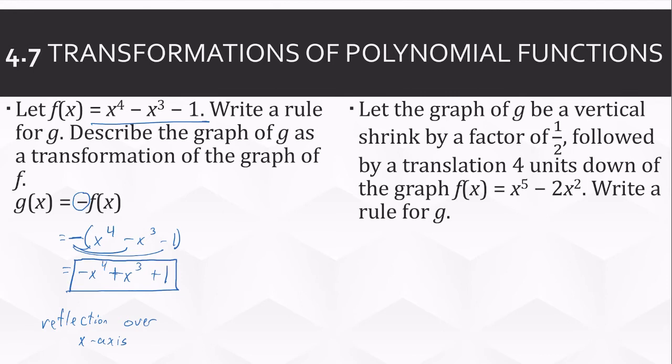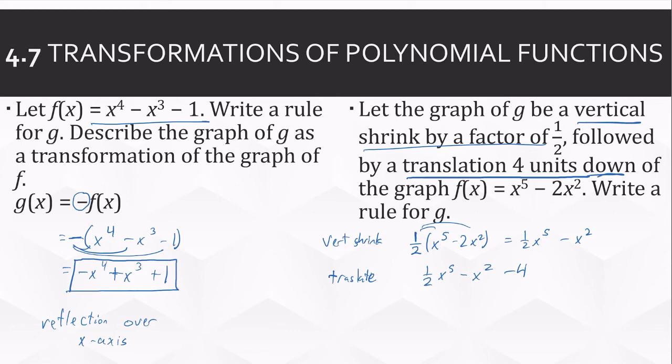Let's try another one. Alright, we want a vertical shrink by a factor of a half. Vertical shrinks are in front, we're multiplying. Okay, so this is our vertical shrink. So I'll distribute the half. One half times 2 is 1. Then followed by a translation four units down. Alright, translating four units down means I'm going to add a k to the end, or subtract a k, so we'll subtract 4 from the end. And there we are.